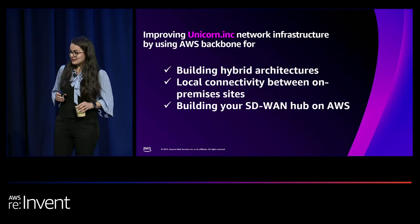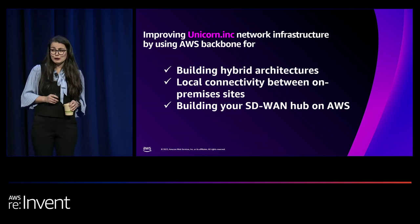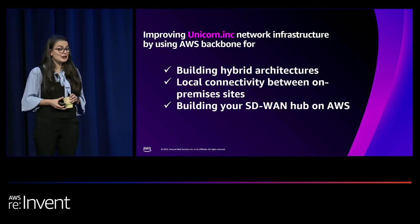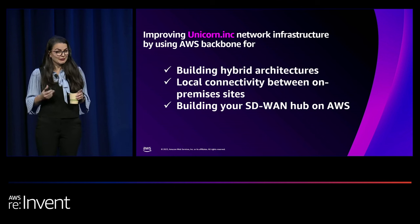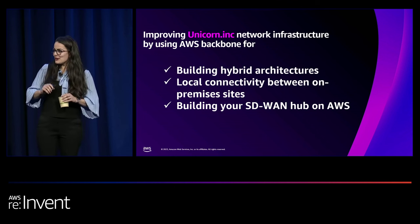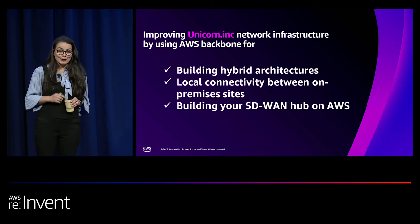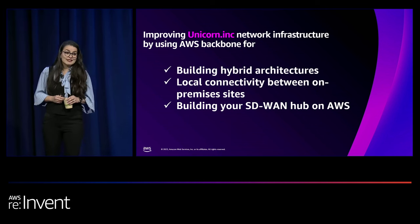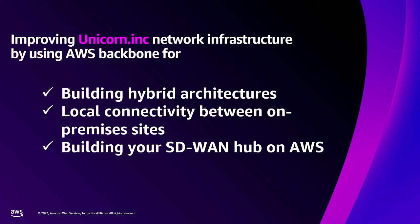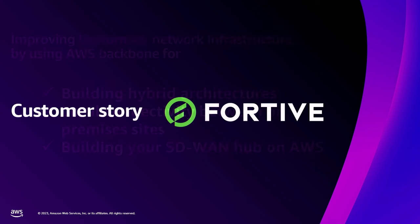We went through a lot in the last 30 minutes — hopefully all useful scenarios, or at least one useful scenario for each of you that you can implement or that made you think. Now, for a real-life example of Unicorn.think, I'm going to hand over to Nick, and he will tell us how Fortiv have used AWS Cloud WAN and the AWS Global Network to build their global network. Thank you so much, Karina. It's really great to be here. My name is Nick Mullinex, I'm with Fortiv, and this is our story about how we migrated our physical data center interconnectivity into AWS.